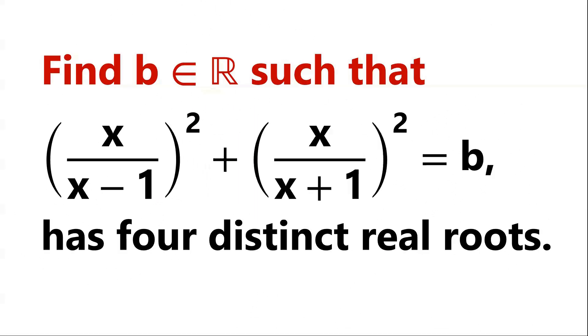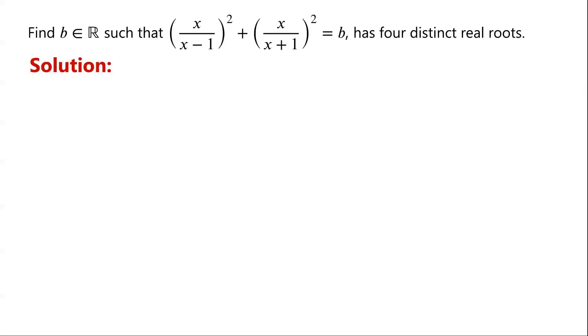Find all real numbers b such that the equation has four distinct real roots. We notice that the left-hand side of the equation is the sum of two squares.